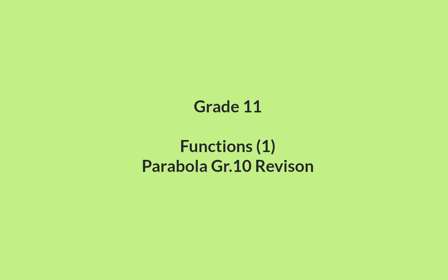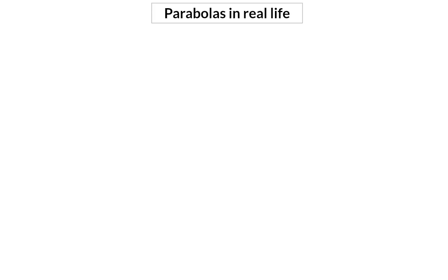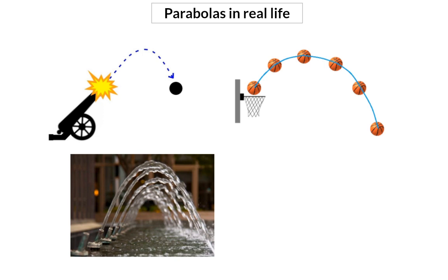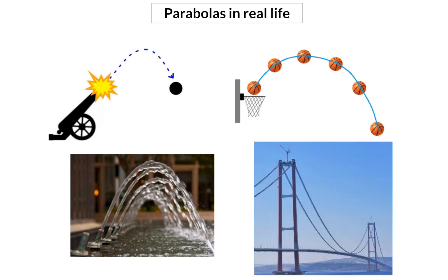In this video we're starting off with the new chapter for grade 11 called functions, beginning with the parabola by revising what you did in grade 10. In real life there are many examples of parabolas: a projectile shot out of a cannon, a ball that is thrown or kicked, water flowing from a fountain, and as an example of a positive parabola we can look at a suspension bridge.